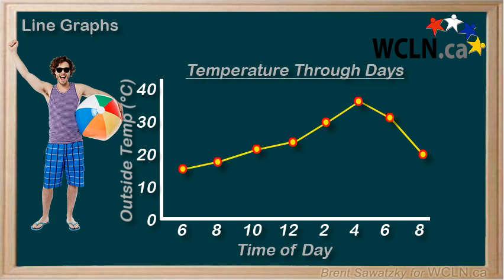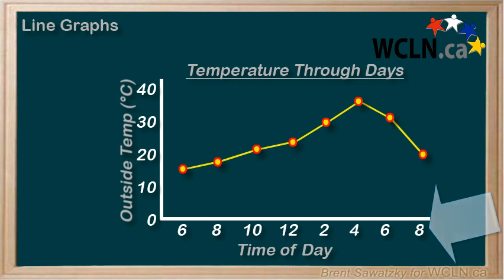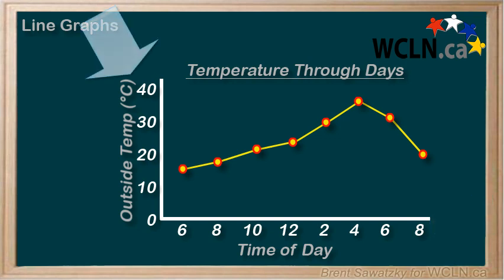For every properly done line graph, we have a main title describing the graph, a title and scale along the bottom, and a title and scale along the side.